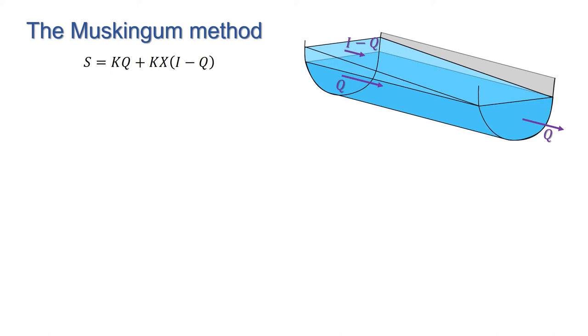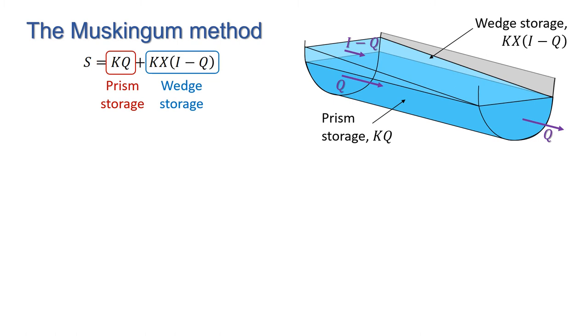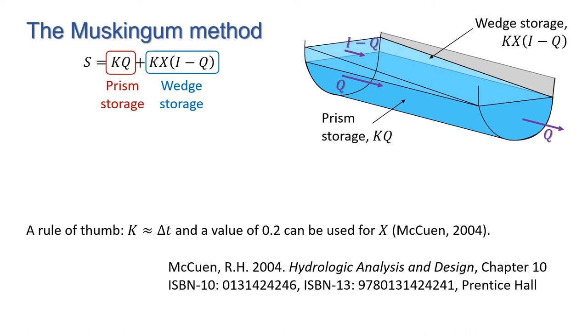In our equation for the storage s equals kq plus kx(i minus q), the first term is the prism storage, where k is a proportionality coefficient, and the second term kx times (i minus q) is the volume of the wedge storage, where x is a weighting factor, which is a number between 0 and 0.5. Our rule of thumb is that k is approximately equal to delta t, and the value of 0.2 can be used for x, and there's a reference there which you can look up for more details of where those values came from.